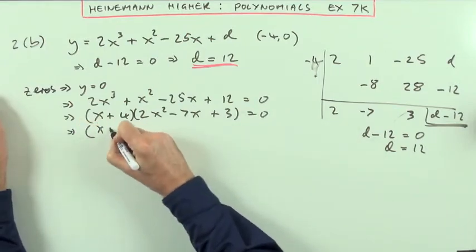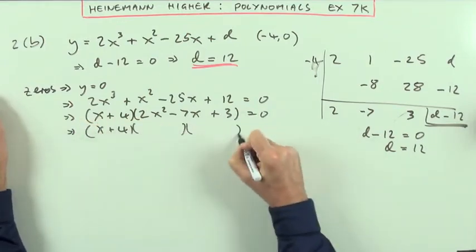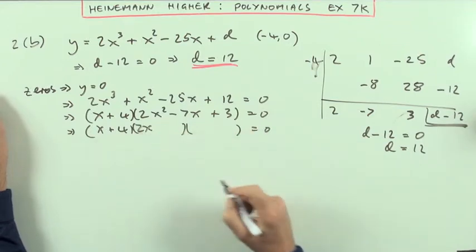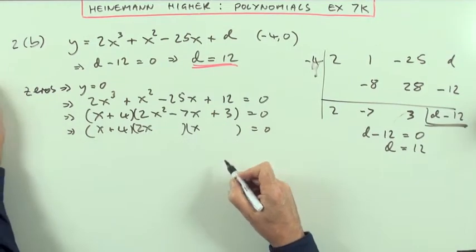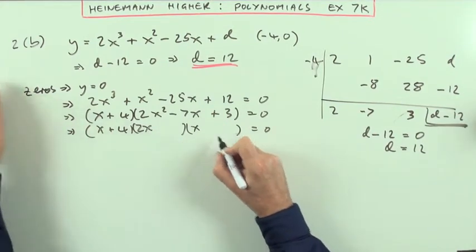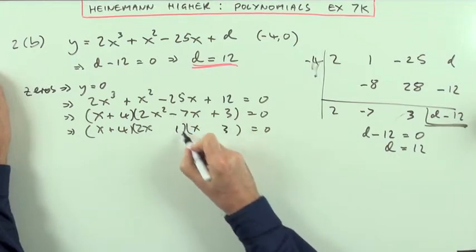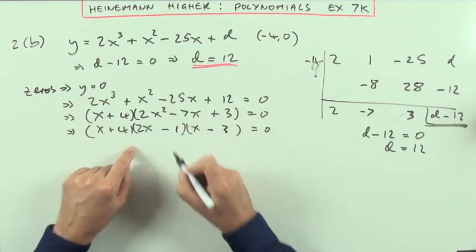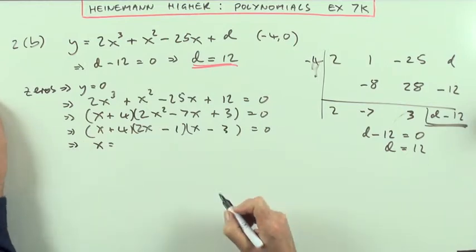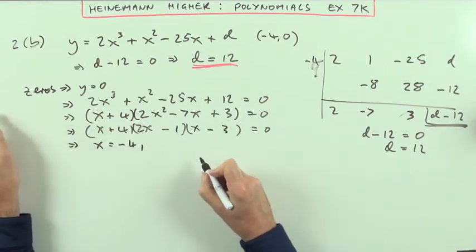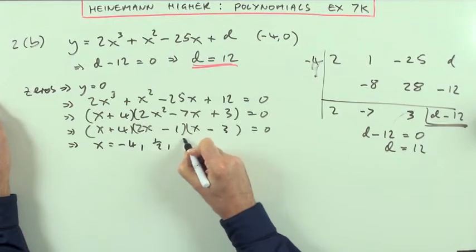So it's just a case of factorizing that quadratic myself. Given that it factorizes by the duplication of the question, it must be 2x times x, it must be 1 times the 3, and that would be a 6, so it must be the 1 and the 3. The negative must go to the bigger, but that says they're both negative. And then finally, that means that x is going to be, putting them in order, negative 4, then a half, then 3.